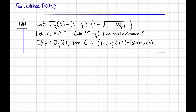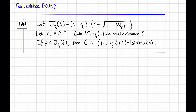The theorem says: if p, our list decoding radius, is less than j sub q of delta, then C is list decodable with radius p and list size q times delta times n squared.